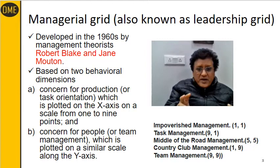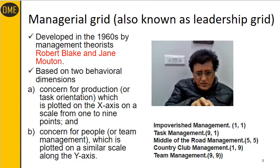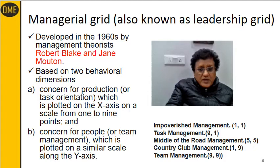For example, at position 1,1 — where concern for production on the x-axis is one and concern for people on the y-axis is also one — both are low. This position is called impoverished management.